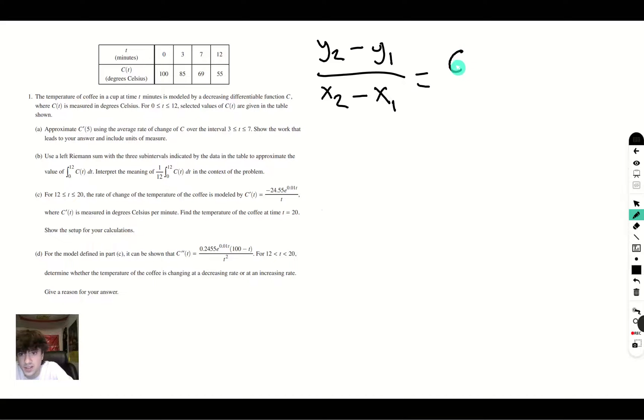C of 7 is 69, as shown here, minus 85, 7 minus 3. This gives you negative 16 over 4, which is negative 4. And our units will be Celsius per minute, because it is degrees Celsius divided by minutes. So that will be your units of measure.